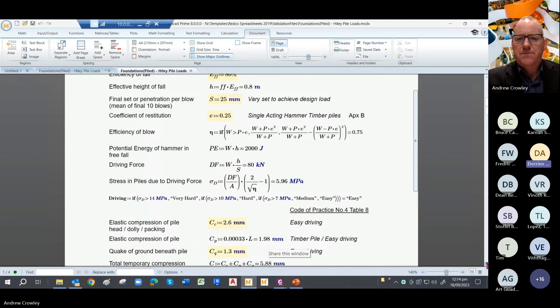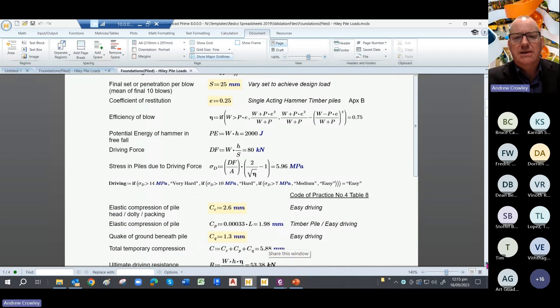And the coefficient of restitution, the E, comes from Appendix B of that civil engineering code of practice. From the table you get the E value of 0.25. The efficiency of the blow, eta, is calculated depending on whether your weight of the driving hammer is heavier than the weight of the pile and the anvil, etc. And you end up with two different formulas. So that's where I've put in an if statement to achieve the eta value of 0.75.